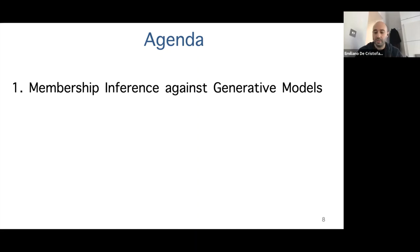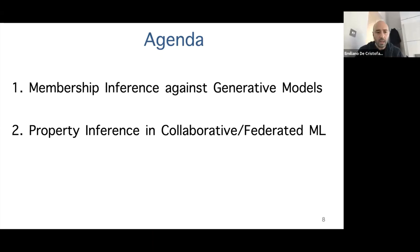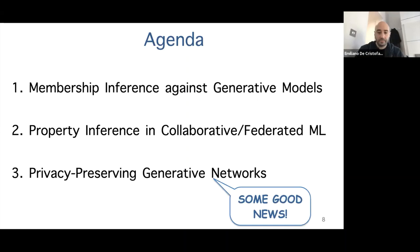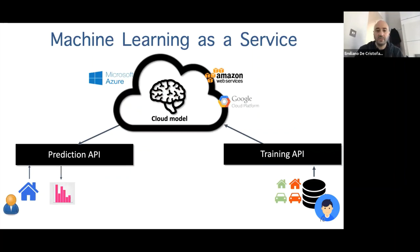The roadmap for today: first, membership inference — specifically our work on generative models — then property inference attacks in the context of federated learning, and finally some good news: mechanisms to build and train generative networks in a privacy-preserving way.